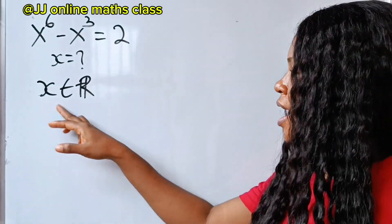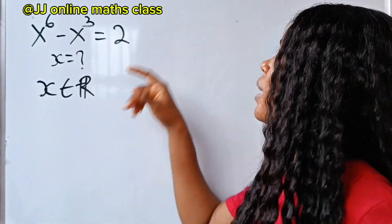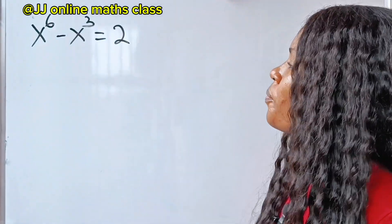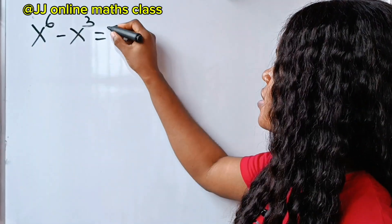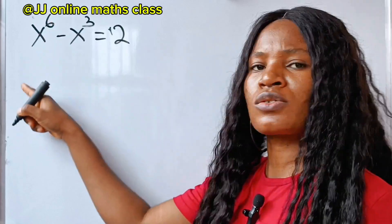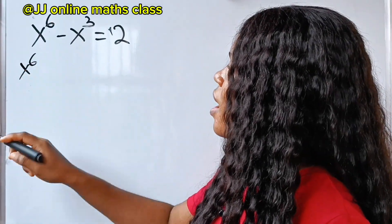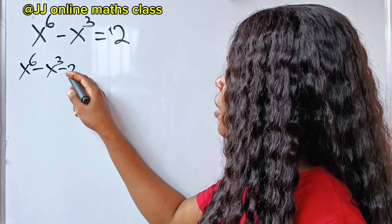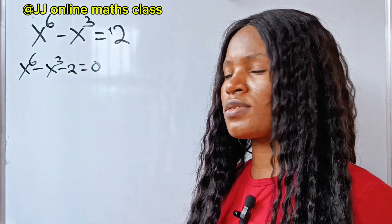Let's solve for x, where x is a real number. First thing we need to do is bring this to the other side of the equation. This is plus 2, so if it crosses to the other side it becomes minus 2. So we have x to the power of 6 minus x to the power of 3 minus 2 is equal to 0.